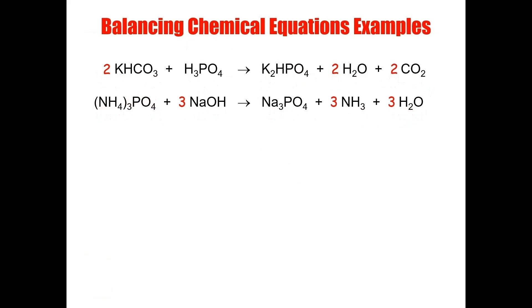By doing that, I've changed the amount of hydrogen again — but that's okay, because we skipped hydrogen. Now let's try to balance hydrogen as the last element. Three times three is nine, and three times two is six — nine plus six is 15, so I have 15 on this side. On the other side, four times three is twelve, plus three is 15. I've inadvertently balanced the hydrogen just by leaving it to the last step. That's why it's so important to follow these rules step by step — if I tried to balance hydrogen in the middle of the process it would be very time-consuming.